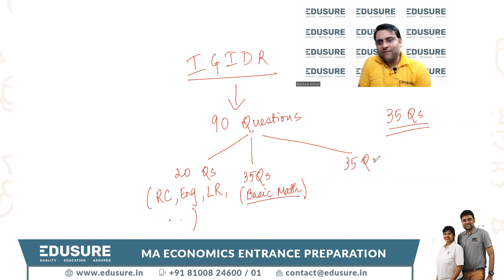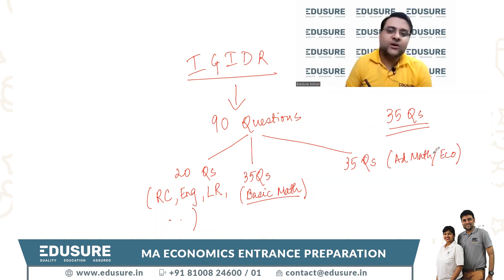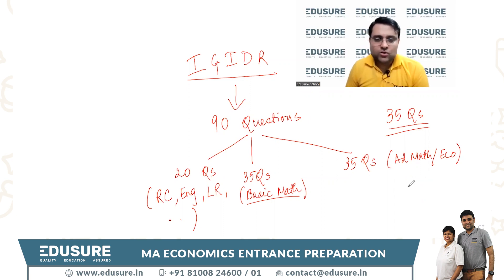For the 35 questions here, you have an option to choose from advanced math or economics. I will encourage all EduSure students to go into the eco part, because it's very rarely that we see an advanced math student getting into IJ IDEA from an eco background. So 35 questions in eco is what you should be attempting.